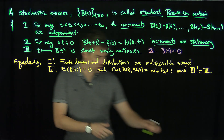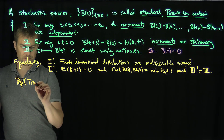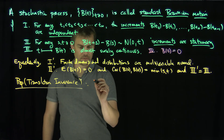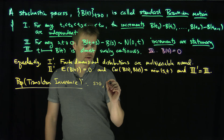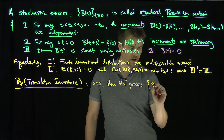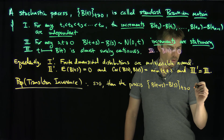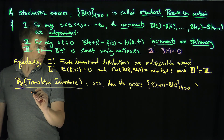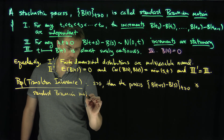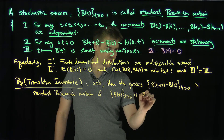Here's the first proposition, called translation invariance. Later we'll also prove the Markov property. Translation invariance says that for any s greater than zero, if b of t is standard Brownian motion, then the process b(t plus s) minus b(s), for t greater than or equal to zero, is also standard Brownian motion.